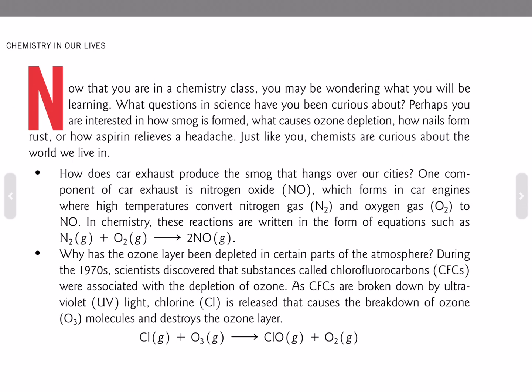Why has the ozone layer been depleted in certain parts of the atmosphere? During the 1970s, scientists discovered that substances called chlorofluorocarbons were associated with the depletion of ozone. As CFCs are broken down by ultraviolet light, chlorine is released that causes a breakdown of ozone molecules and destroys the ozone layer.